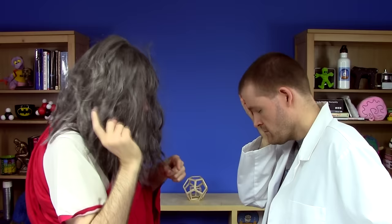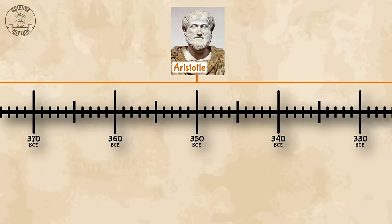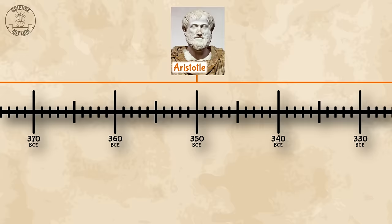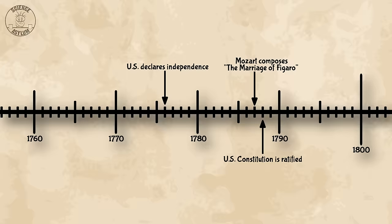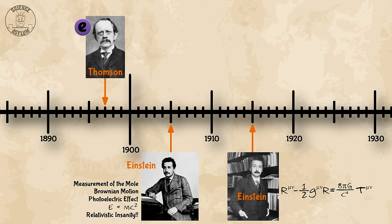Of course, Aristotle thought it was a stupid idea. Anyway, the debate raged on for over 2,000 years. Finally, the 20th century was fast approaching and we made some headway. Thompson discovered the electron in 1897 and proposed a simple model of the atom in 1904: negative electrons floating in a positive mist.